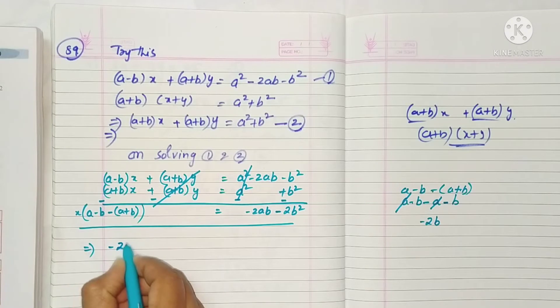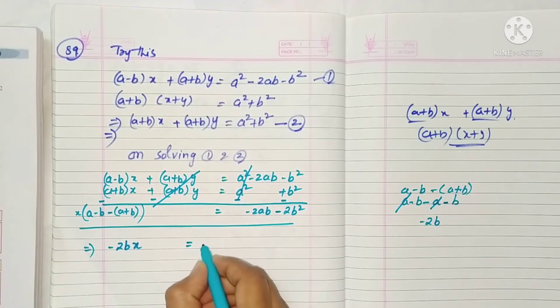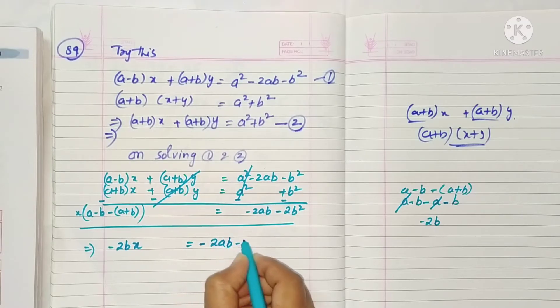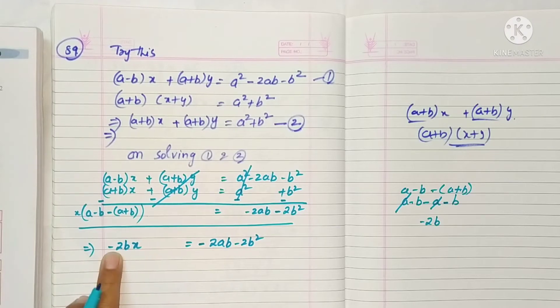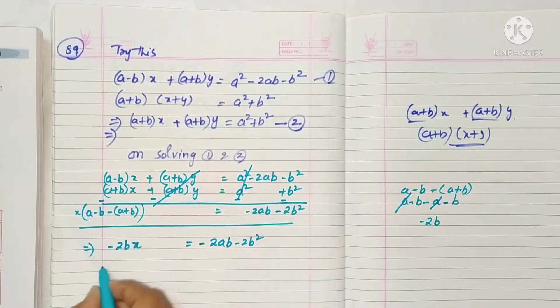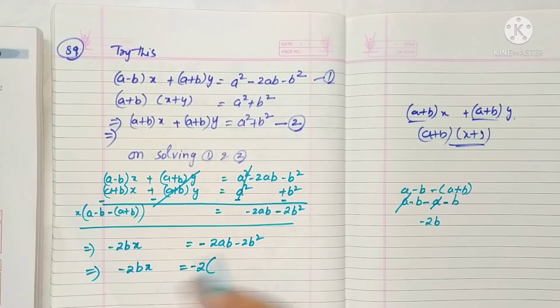So this value is minus 2bx is equal to minus 2ab minus 2b². Okay? So here we can take out minus 2 as common. So minus 2bx is equal to minus 2, take it outside, now common.